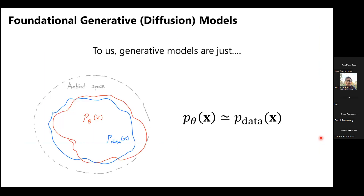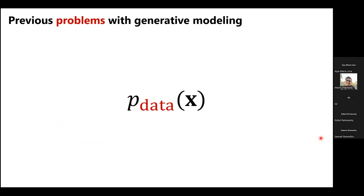All the hype aside, as a biomedical imaging and ML researcher, to us generative models are nothing but a good way to model the data distribution p-data of x. We want it to closely emulate the true data distribution. In practice, this is given by the empirical data distribution, and hence it is capped by our ability to collect good large-scale data. If you don't have high-quality data to train your model on some distribution, you're doomed on that specific subset.